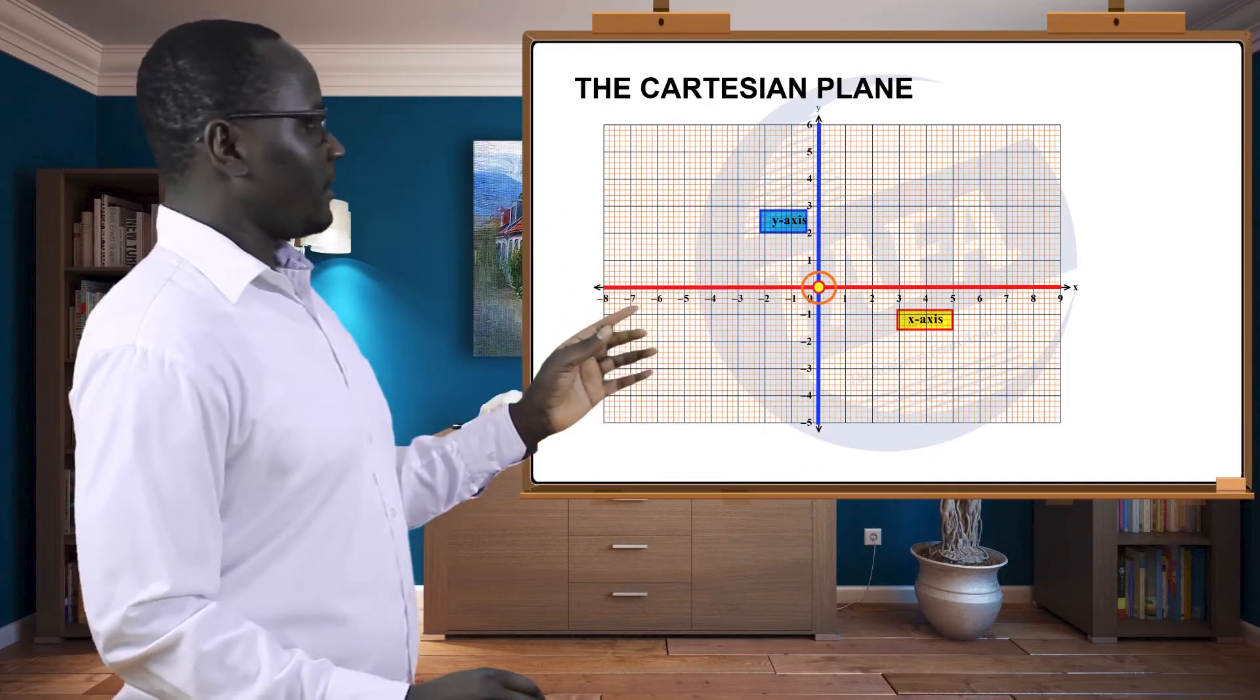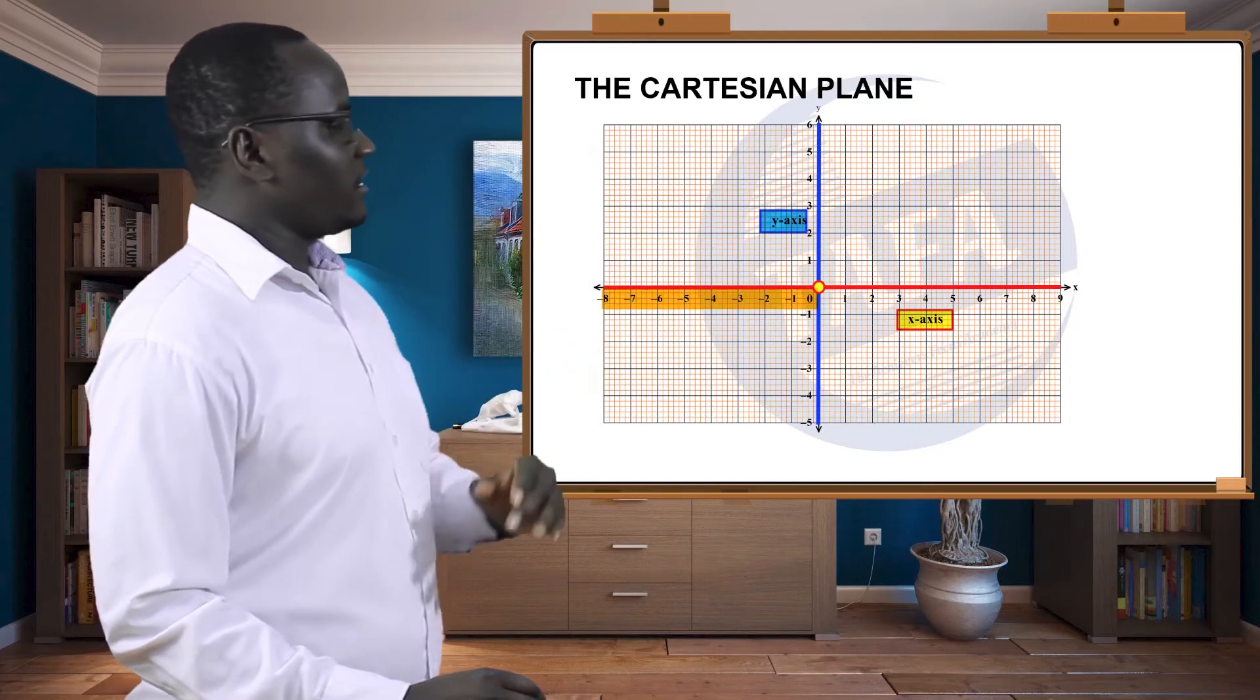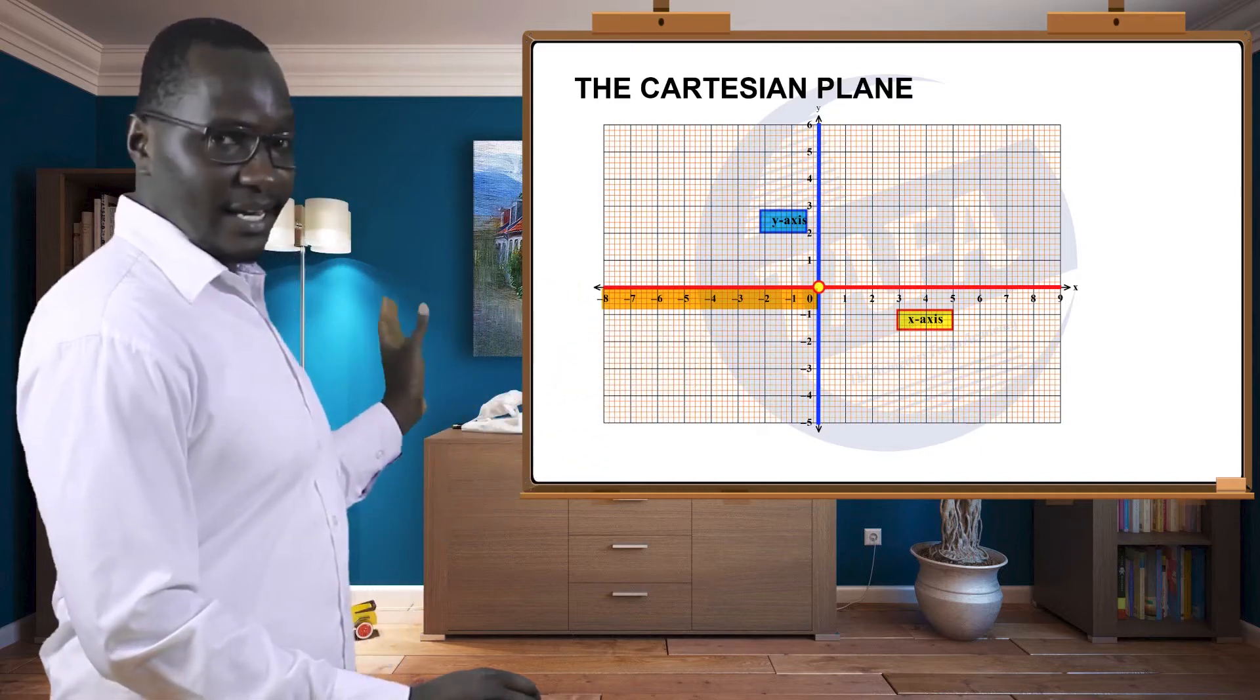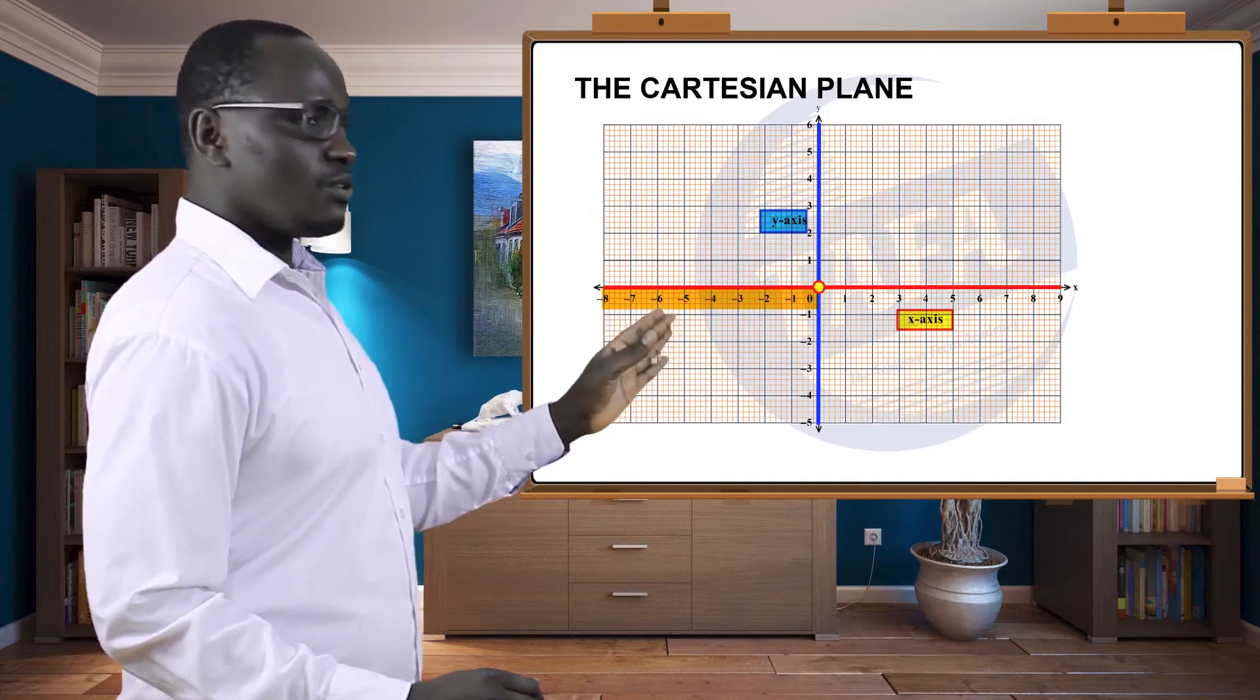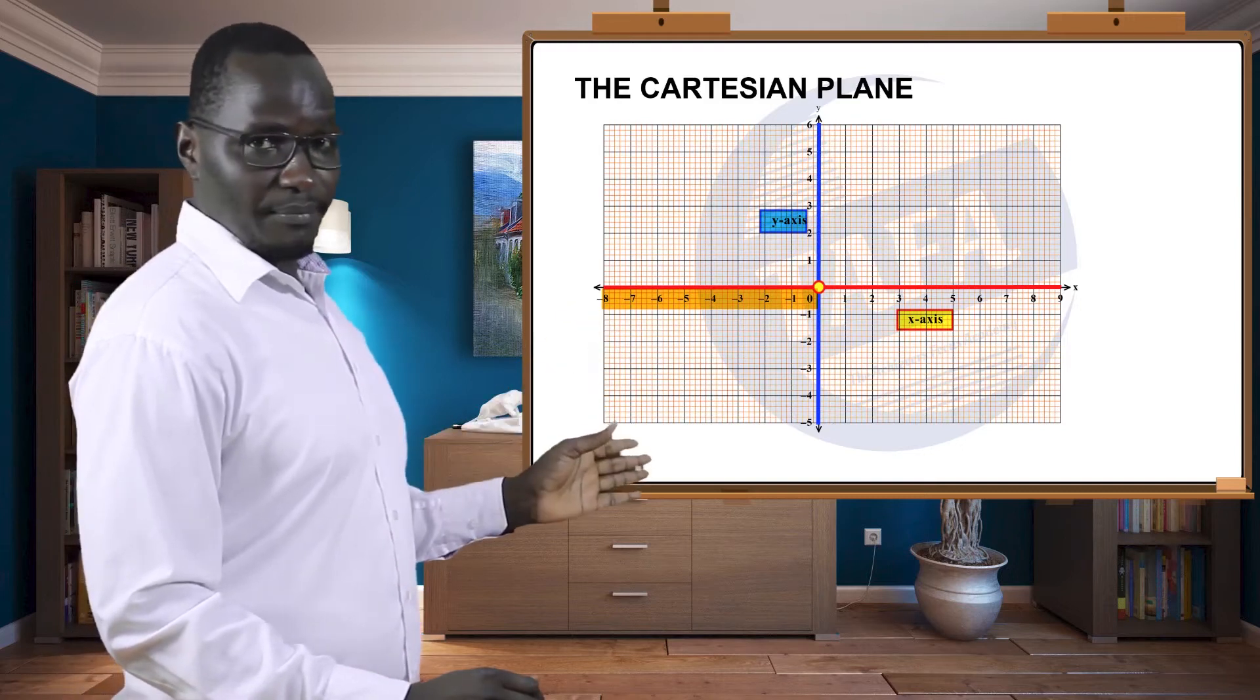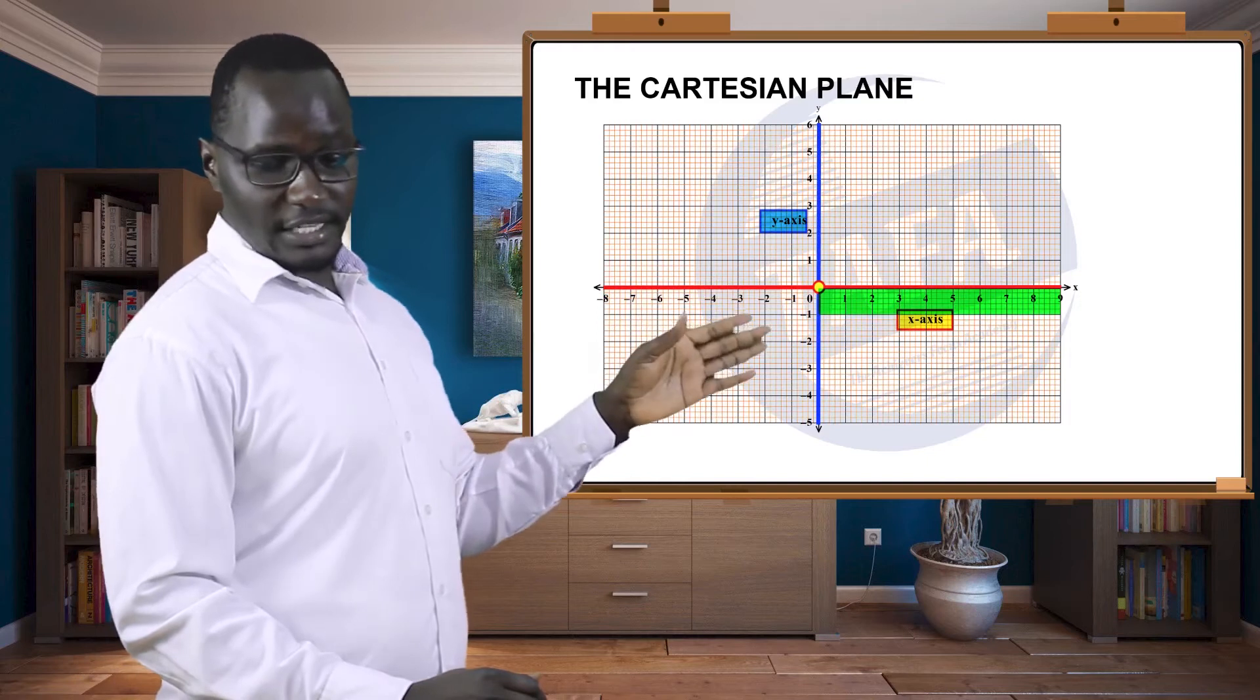Now you see to your left, or on the x-axis to your left, the numbers are negative, just like we are looking at when you're looking at the number line. After zero, to the left the numbers become negative and they become smaller. To the right the numbers are positive and they become larger and larger.